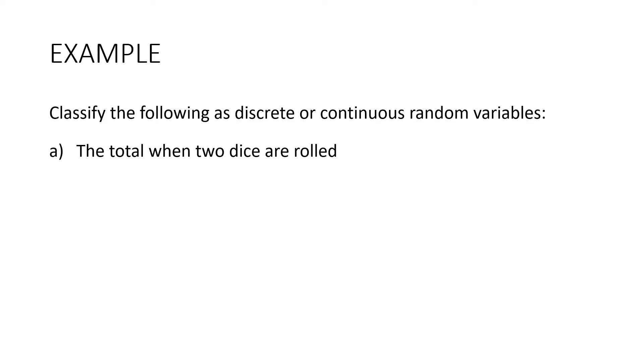Let's look at this example. Classify the following as discrete or continuous random variables. The total when two dice are rolled. So the first thing I do in this sort of situation is think about the sort of numbers that we're going to get. We could get 7 or 8 or 2 or 12, and they're all whole numbers. They're discrete data. So this is a discrete random variable.